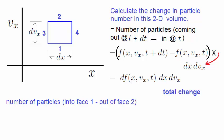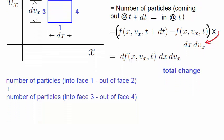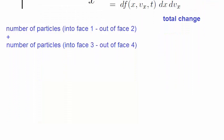Let's now look at how this change occurs. Let's say the particles go into face 1 and out of face 2, as well as going into face 3 and out of face 4. So the change in the particle number is the number of particles going into face 1 minus the number of particles going out of face 2 plus the number of particles going into face 3 minus the number of particles coming out of face 4.